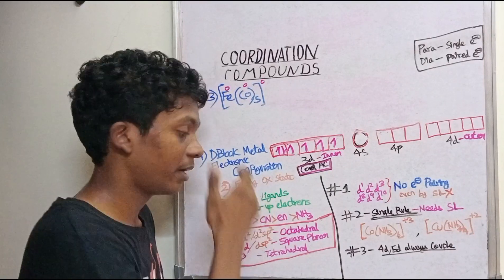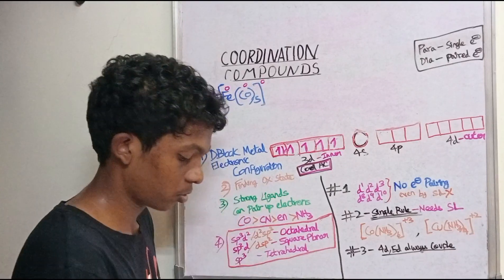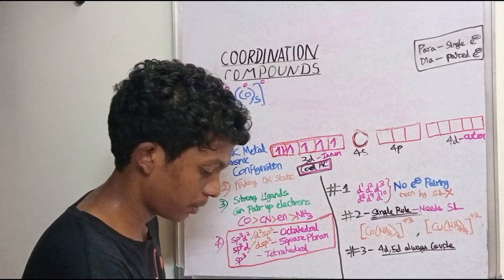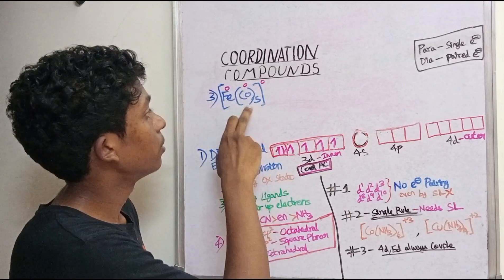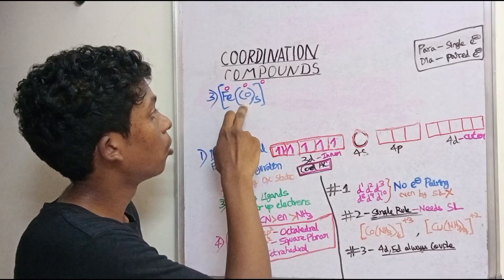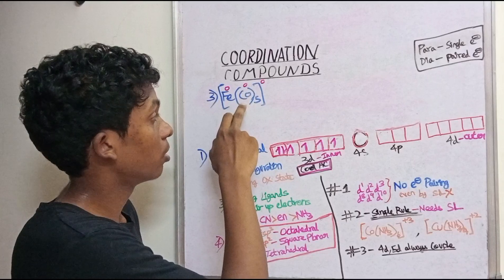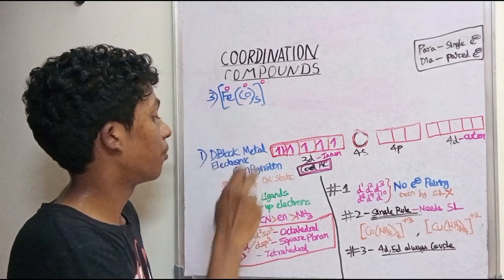Now, how strong is the ligand? CO is a carbonyl compound — it is a strong ligand. So we proceed with the strong ligand pairing rule.